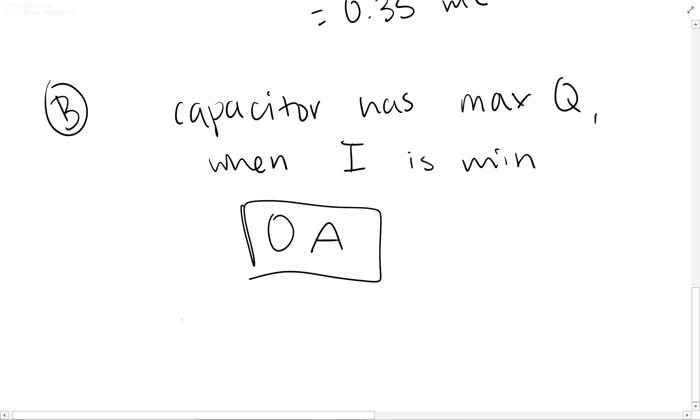Because when a capacitor is at its max charge, there is no current flowing. As it discharges, the current will start back up again. But when it's at its maximum, there is no current.